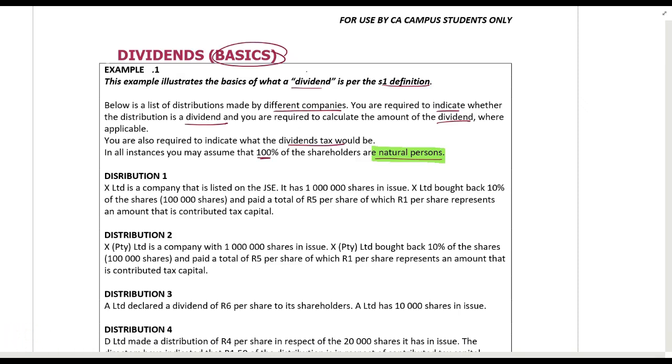Distribution 1: X Limited is a company listed on the JSE. It has 1 million shares in issue. X Ltd bought back 10% of the shares and paid 5R per share, of which 1R per share is contributed tax capital. So 5R, this is how it usually works: 1R is contributed tax capital and 4R is a dividend.